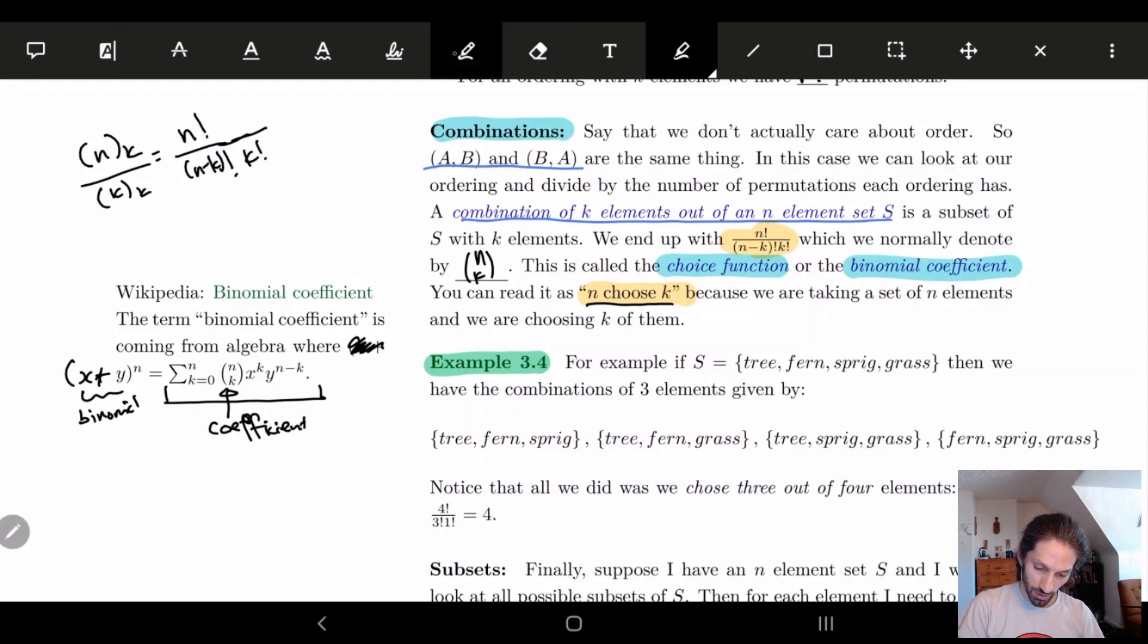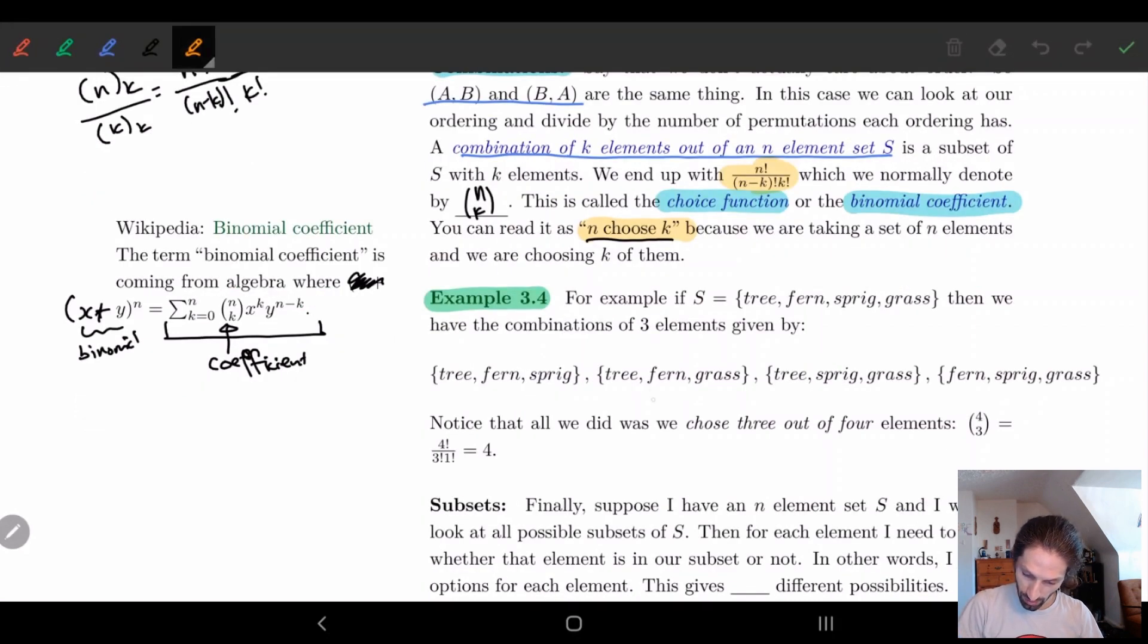But it turns out for us this choice function makes a lot more sense. Because what I'm saying is I have n elements and I choose three of them. I don't care about the order I just am choosing three. And so let's look at an example on kind of how this works. So example 3.4 I have this set here: tree, fern, sprig, and grass. So say I have my set S here. So here I know automatically that n is equal to 4. And I'm going to be asking combinations of three elements.